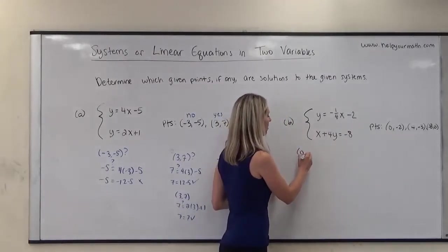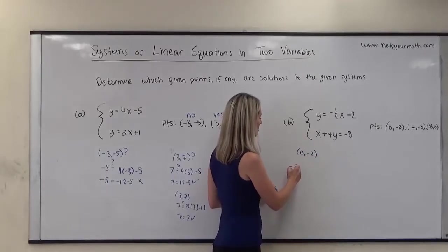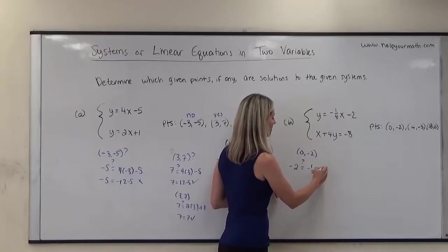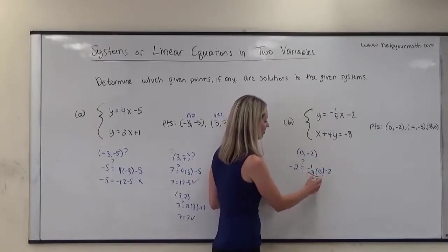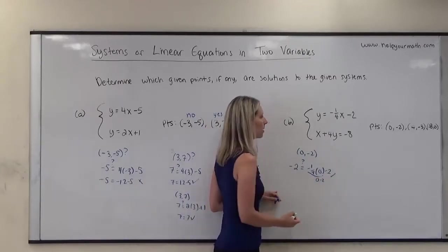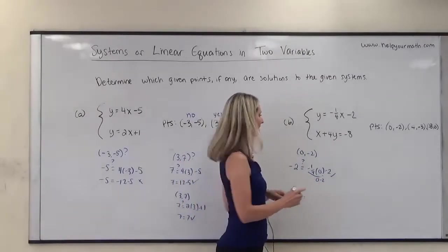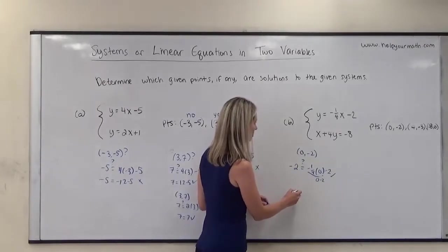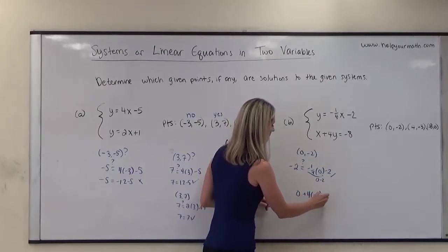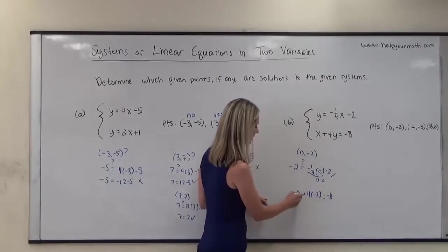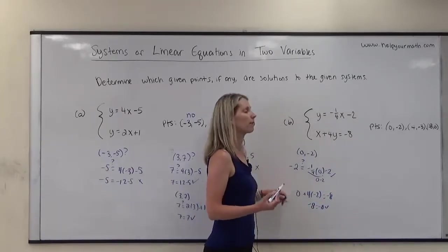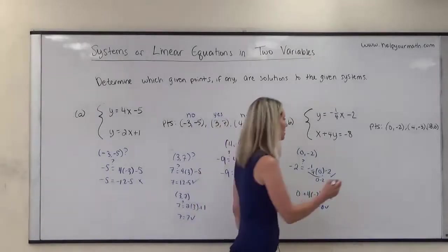We're going to start with 0, negative 2. Does negative 2 equal negative one-fourth times 0 minus 2? That's 0 minus 2, which is negative 2 — it works for the first equation. Now let's try the second equation: does 0 plus 4 times negative 2 equal negative 8? That's 0 plus negative 8 equals negative 8 — yes, it works. So 0, negative 2 is a solution to the system.